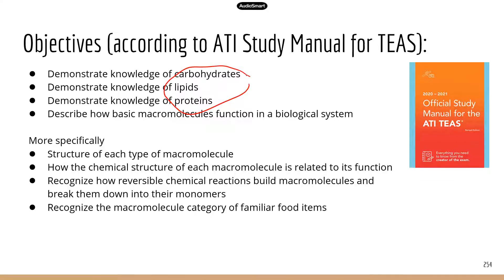I don't know why they only listed three — it could be a typo. I think they're supposed to have all four listed here. So they are carbohydrates, lipids, proteins, and nucleic acids. You need to be able to describe how basic macromolecules function in the biological system — basically the specific functions of each group.